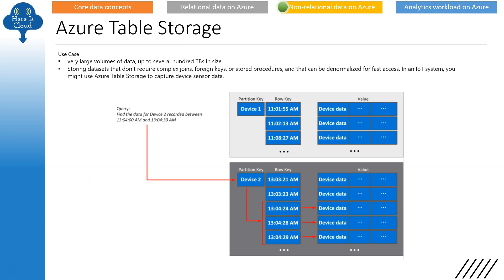Talking about non-relational data on Azure — Azure Table Storage. Remember its use cases: it is used for very large volumes of data up to several hundred terabytes. It is used for storing databases that don't require complex joins, foreign keys, or stored procedures, and that can be denormalized for fast access. In an IoT system, you might use this to capture device sensor data. The structure has a partition key, row key, and associated values. Keep that structure in mind.